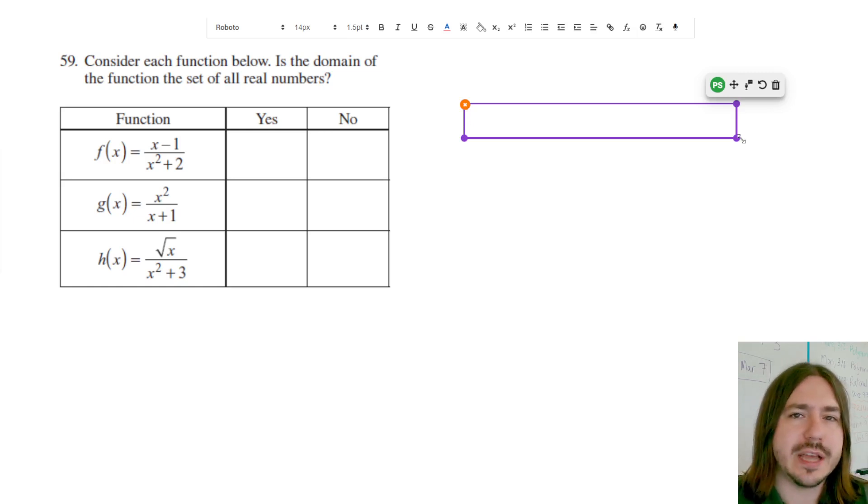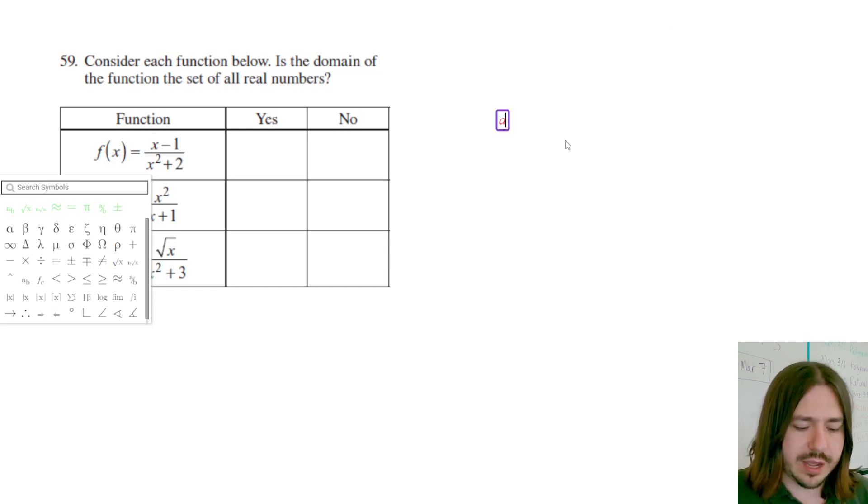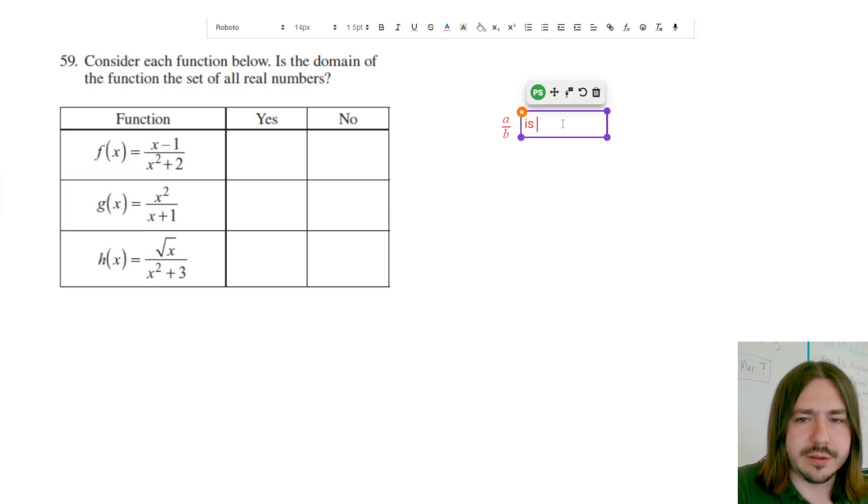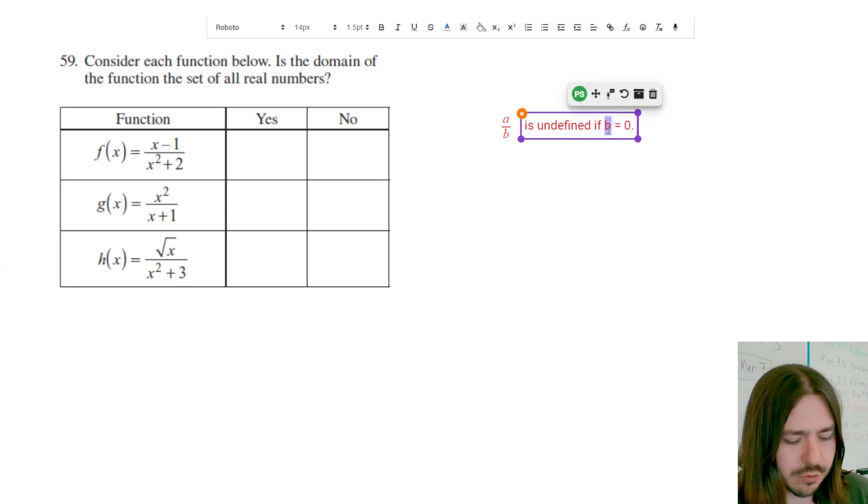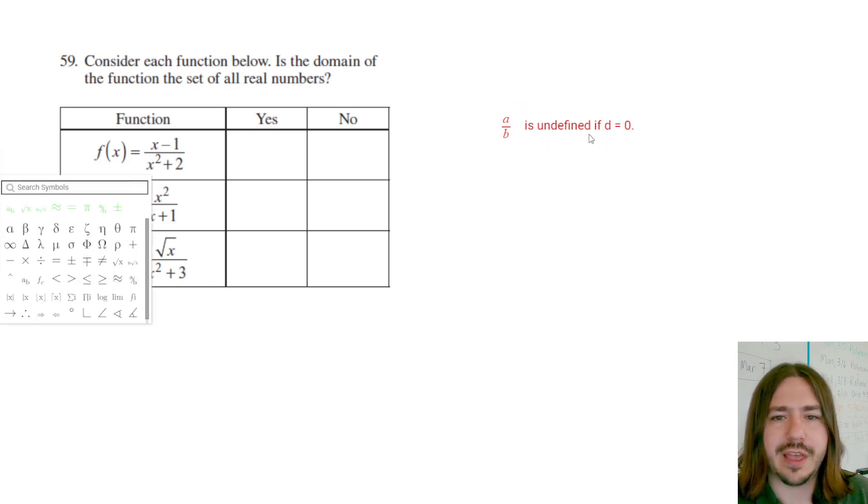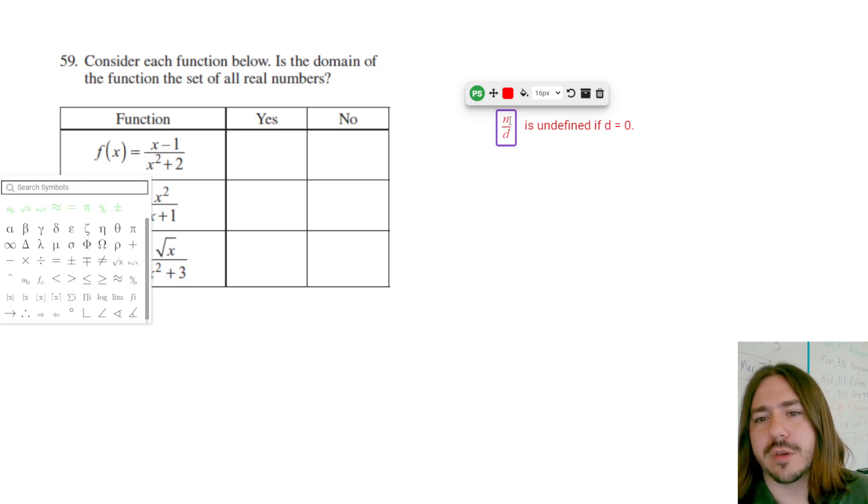Therefore the domain wouldn't be all real numbers. So what we need to be thinking about is, are there any potential x values that I could plug in that would make the function undefined? With a fraction, a over b, it's going to be undefined if b equals zero.